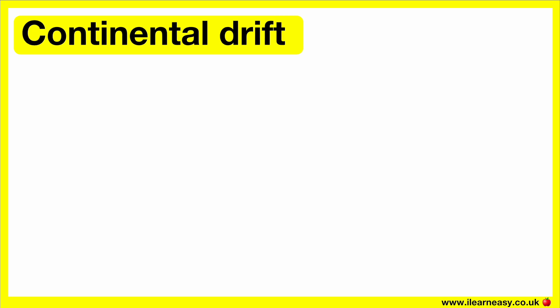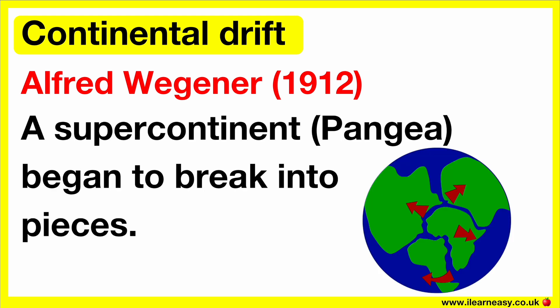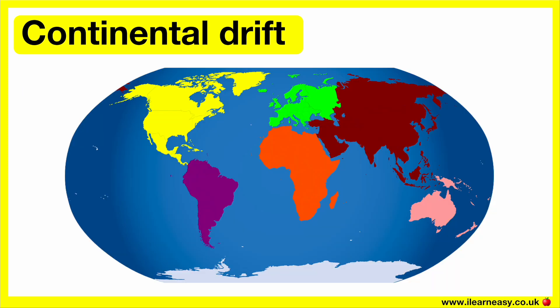In 1912, a German scientist published the concept called Continental Drift. He suggested that over 200 million years ago, a supercontinent began to break into pieces and moved away from one another. He called this supercontinent Pangaea. The process of this supercontinent breaking into pieces and these pieces moving away from one another produced all the different continents that we see today.